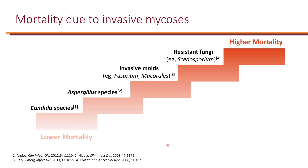Now, let's take a look at mortality due to invasive mycoses. Candida species typically cause the least amount of mortality, but still pretty significant — so 10 to 20% mortality rate in invasive candidiasis. And the rate of mortality goes up, especially once we get to the molds. Aspergillus species have significantly higher mortality, around 40% for a lot of patients.